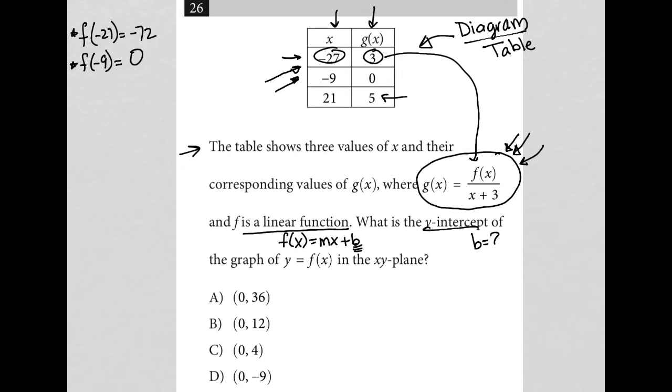So g of x, in this case, is 5 for the third row. And this becomes f of 21 over 21 plus 3. So this becomes 5 equals f of 21 over 24. We multiply both sides by 24, and we end up with 120 equals f of 21. So I have now a third point. I've plugged in everything that I possibly could, and I have these three points.